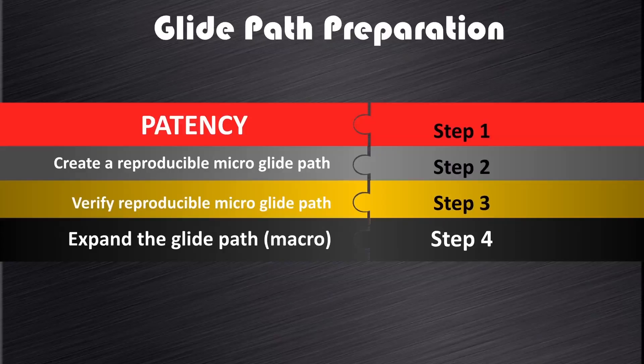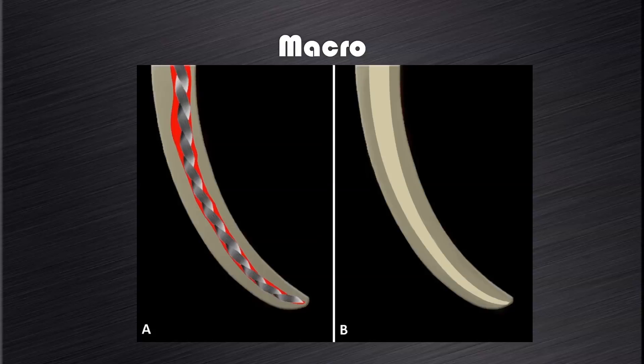Now we are getting to the last stage of glide path preparation, and that is to expand the micro glide path using rotary glide path instruments — for example, Path Files or a single Pro Glider instrument. This will create an even smoother and more regular glide path, making the root canal ready to accept any root canal preparation instrument with safety and respect for the root canal anatomy.